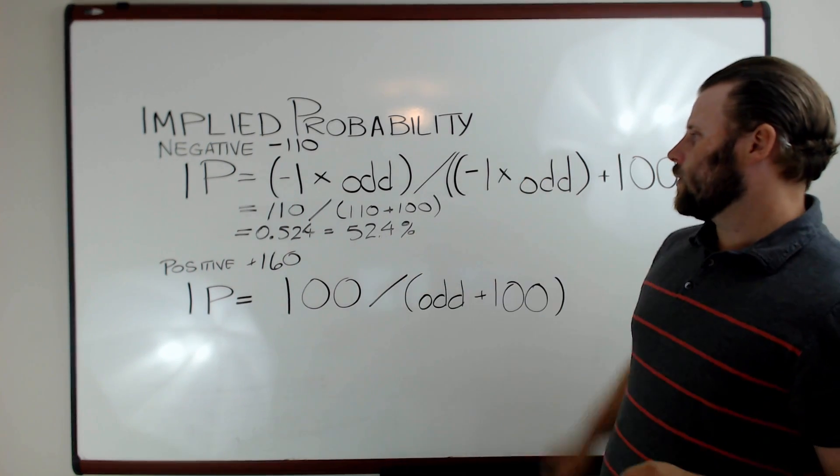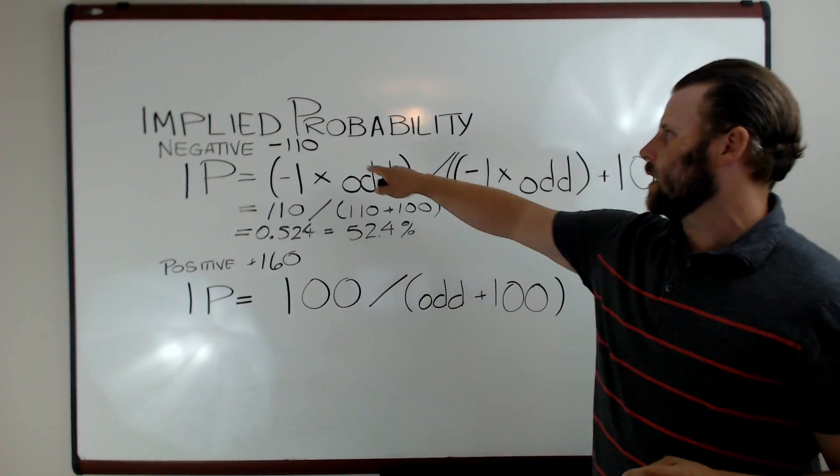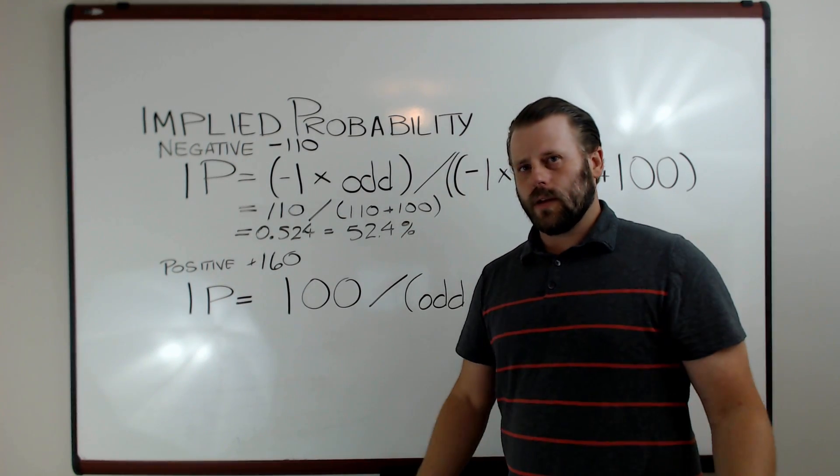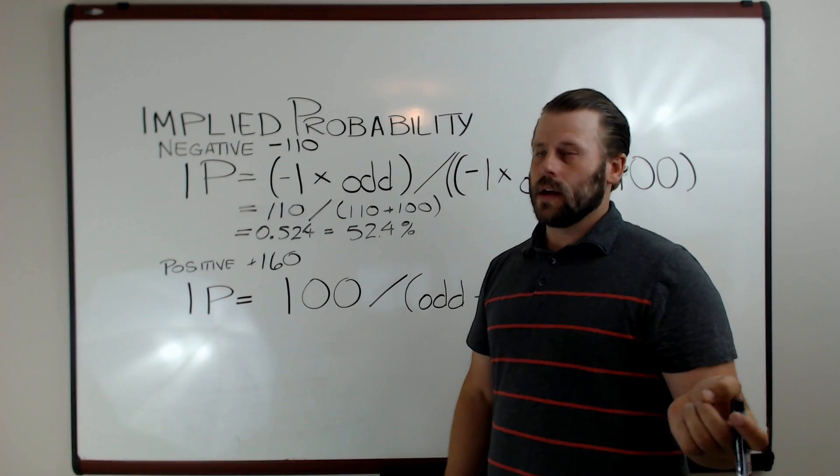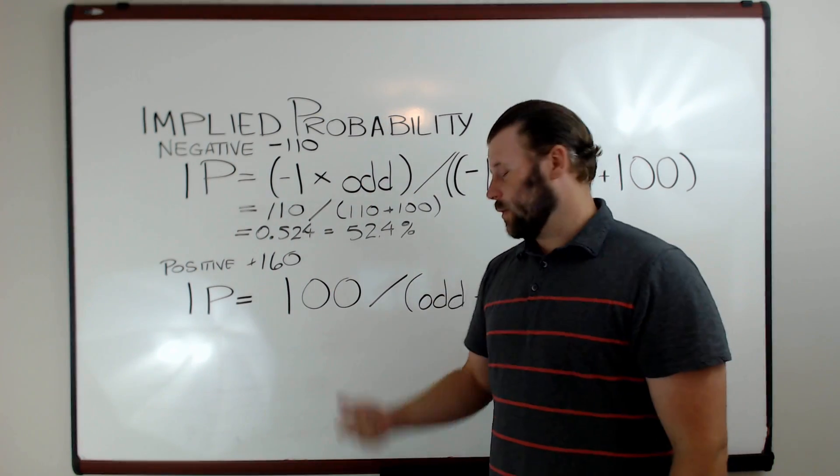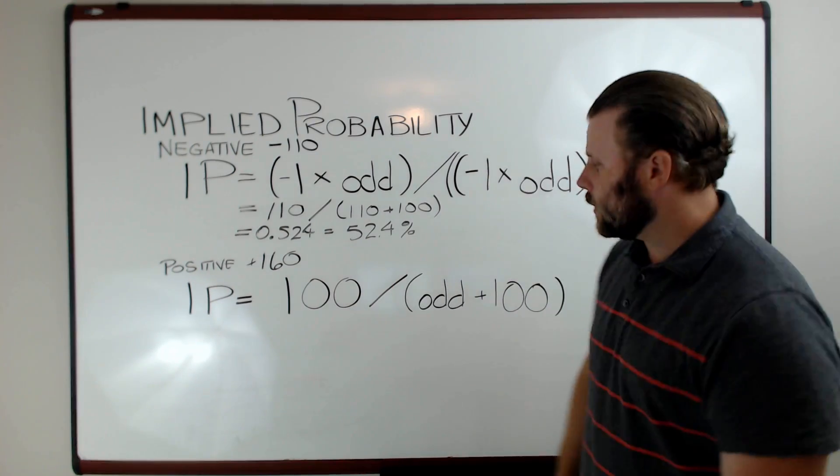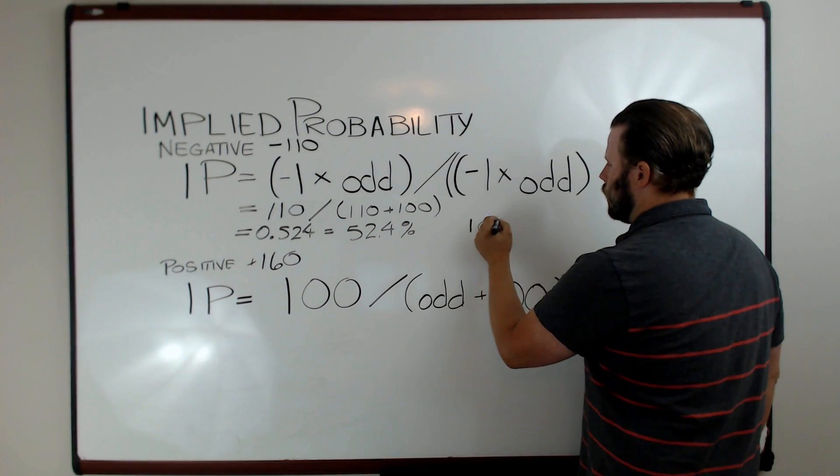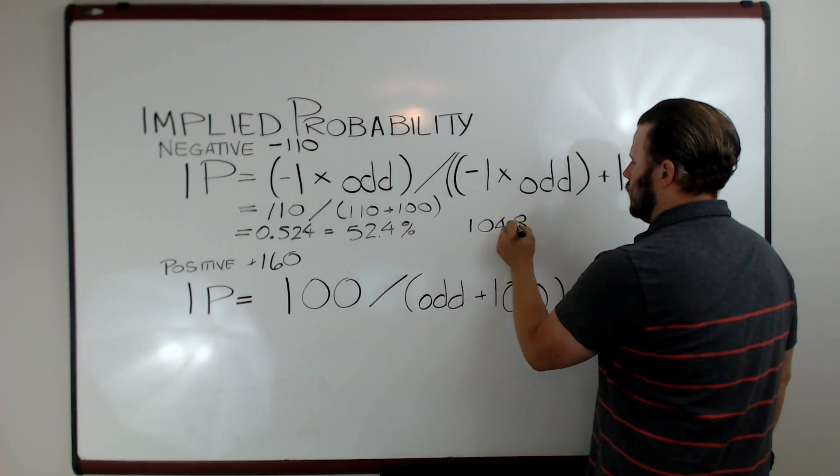What we know from that 52.4 is that on both sides of an against-the-spread bet, we have minus 110 odds. So if we were to calculate it out for the other side of this bet, we would once again get 52.4. Well, you add those together, and you get 104.8 percent.